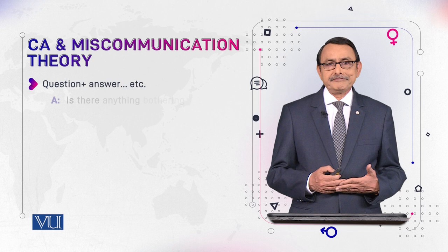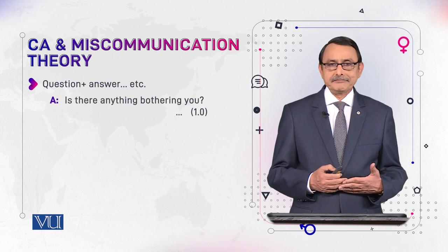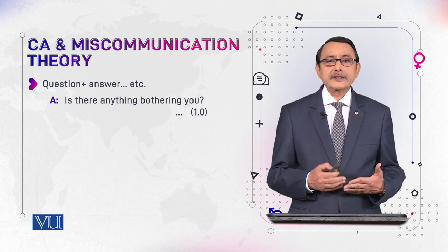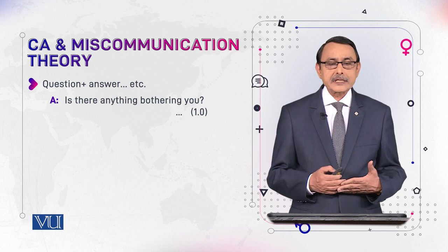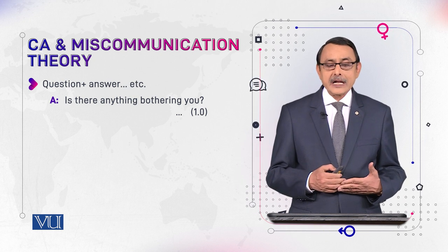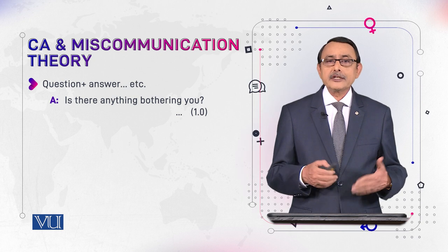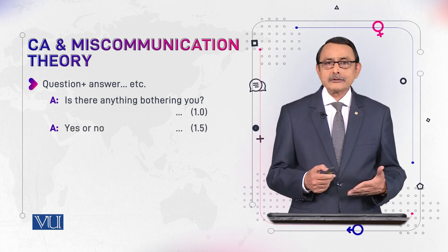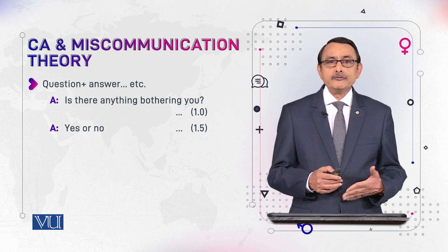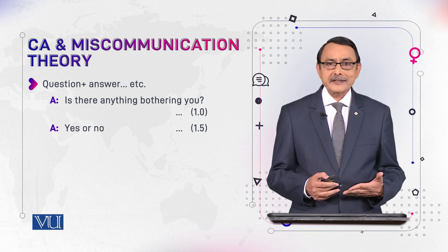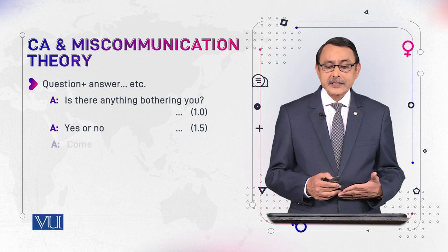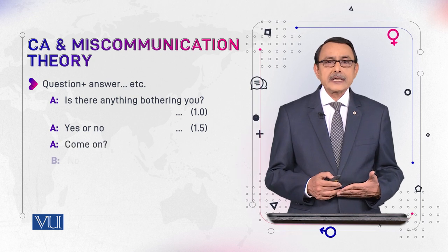For example, speaker A asks a question: 'Is there anything bothering you?' According to the adjacency pair definition, an answer is expected. But the answer doesn't come — there is a pause of at least one second, then speaker A continues asking 'yes or no?' Again there is a pause of one and a half seconds, and still no answer comes. Because the answer is conventionally expected, the question comes again.